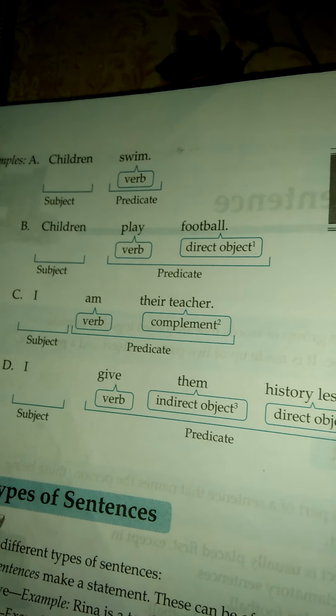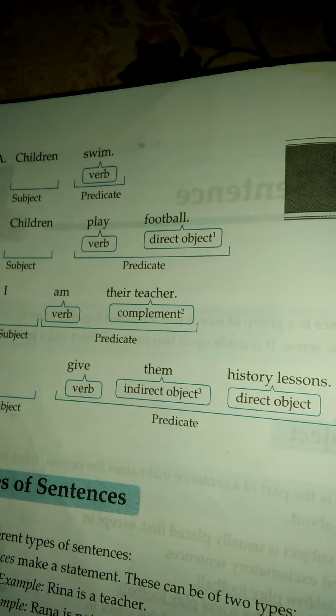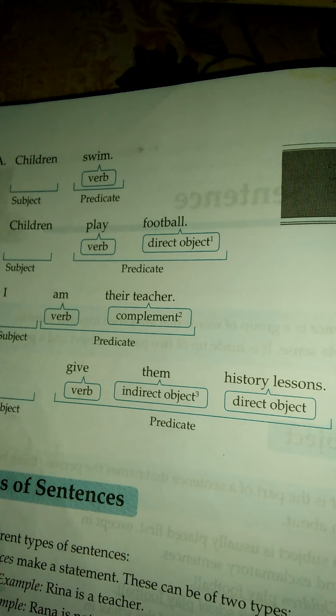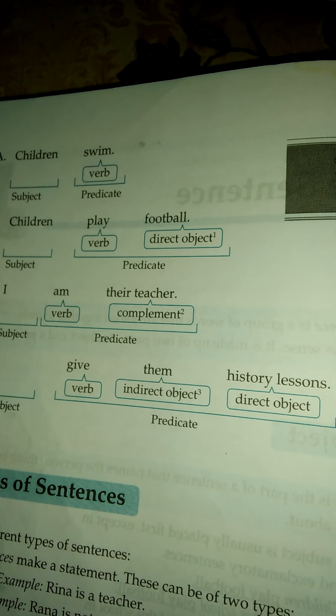As for example, I give them distillation. Them is here the indirect object.